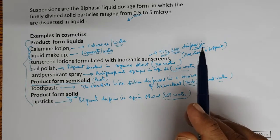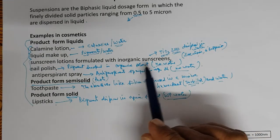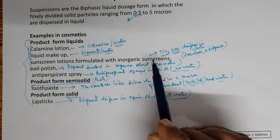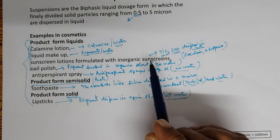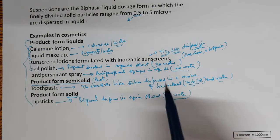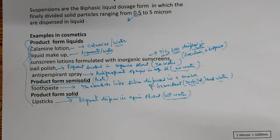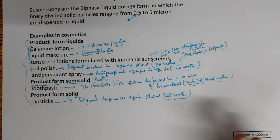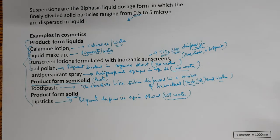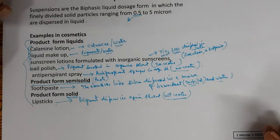Sunscreen lotions can also be an emulsion where the pigments are dispersed. These pigments can be water dispersible and/or oil dispersible — this we will cover in the next part when we discuss the surface coating of the pigments.